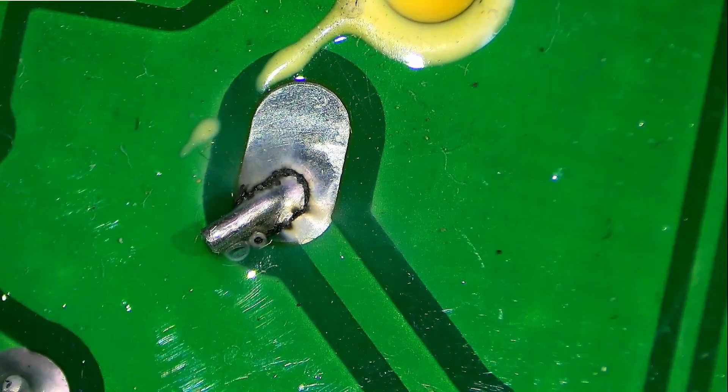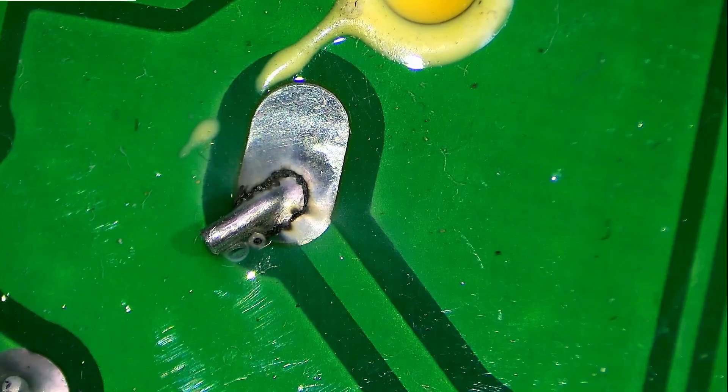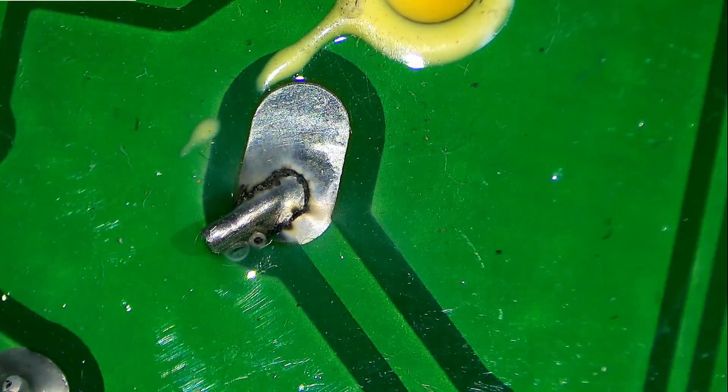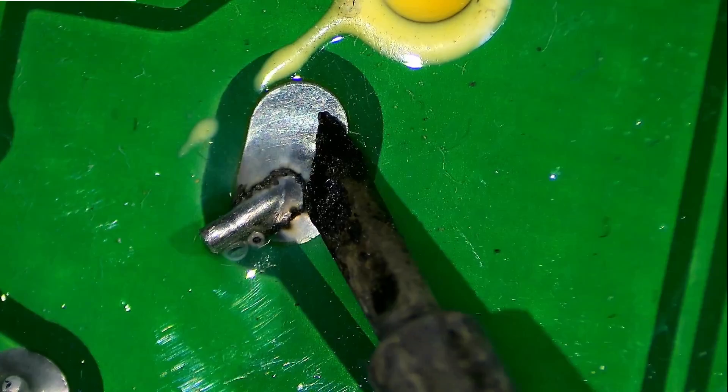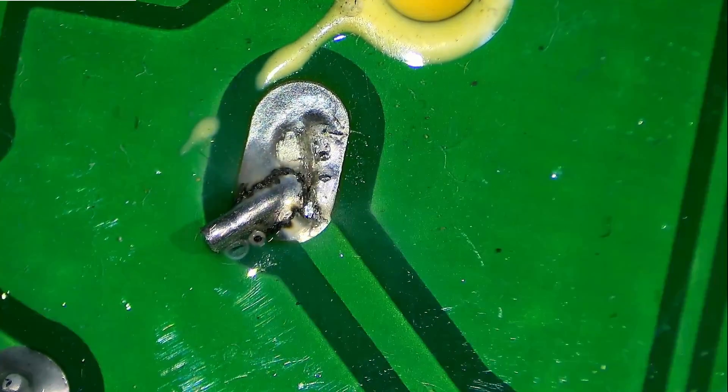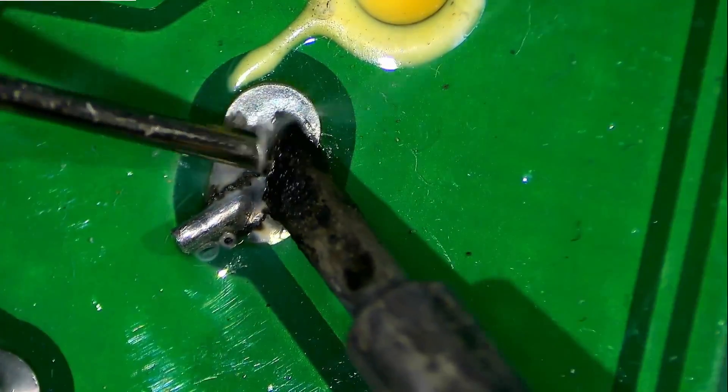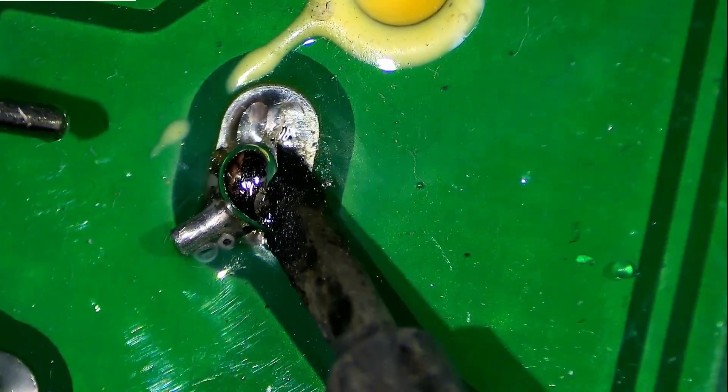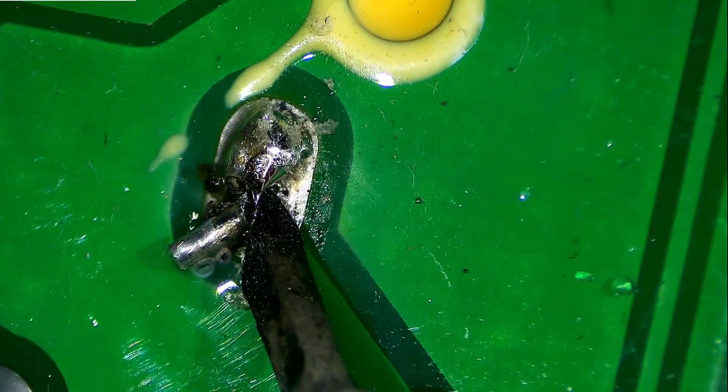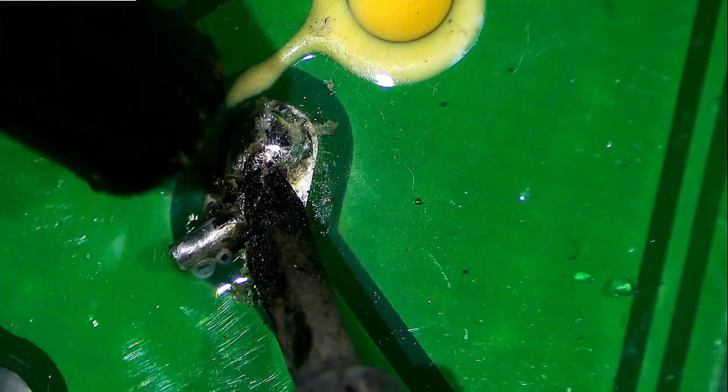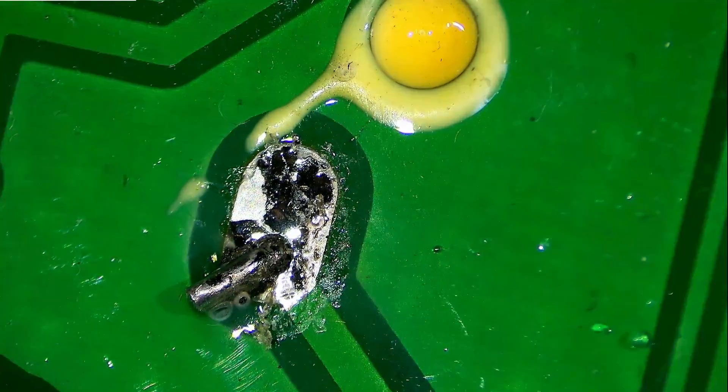So actually, I should have warmed up the bigger iron. Let's see what the little one does. Usually, it's best practice to get this conformal off, but I'm a little lazy with it. So we're just going to soak it with solder. And we're going to actually remove as much of this. You know what, let me get this on a holder.